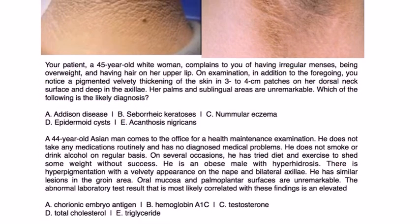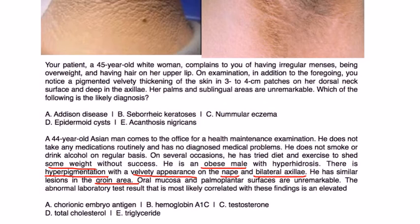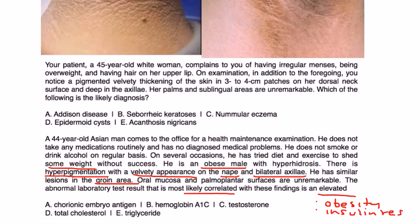Next question: A 44-year-old Asian man comes in for a health maintenance exam. He takes no medications, has no diagnosed medical problems, and does not smoke or drink alcohol. He is an obese male with hyperhidrosis. There is hyperpigmentation with a velvety appearance on the nape and bilateral axillae, and similar lesions in the groin. Oral mucosa and palmoplantar surfaces are unremarkable. The conditions associated with acanthosis nigricans are obesity, insulin resistance, and malignancy.